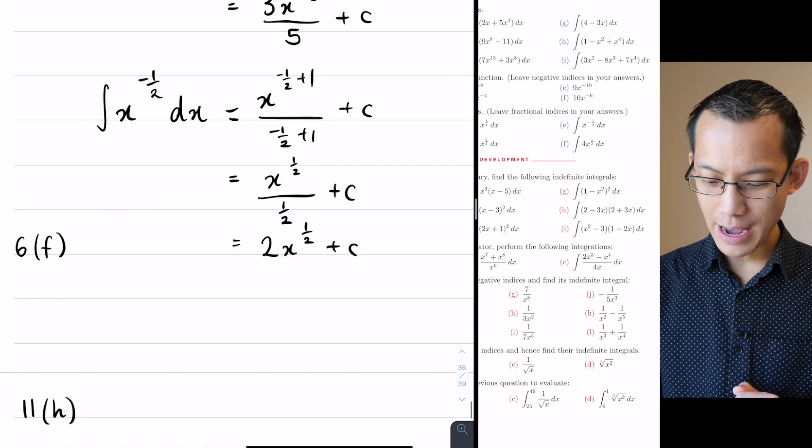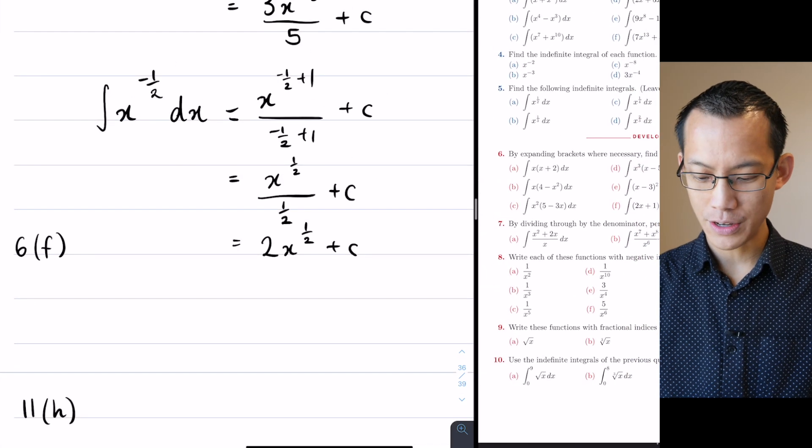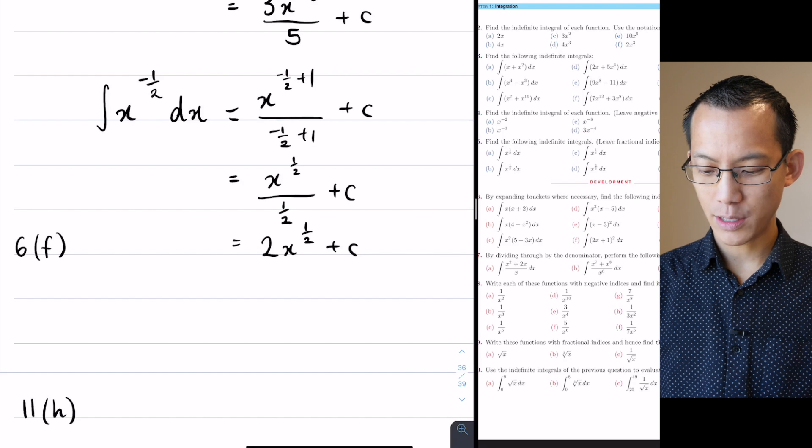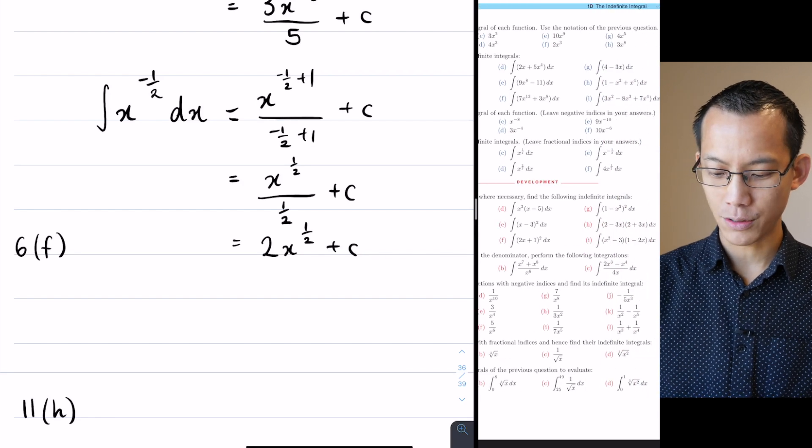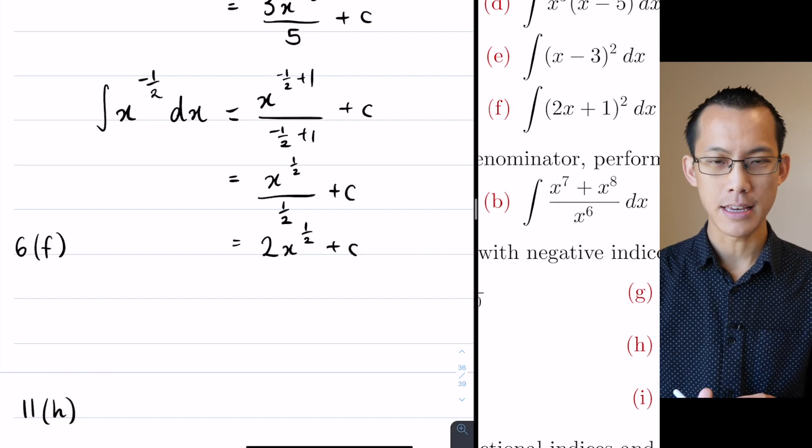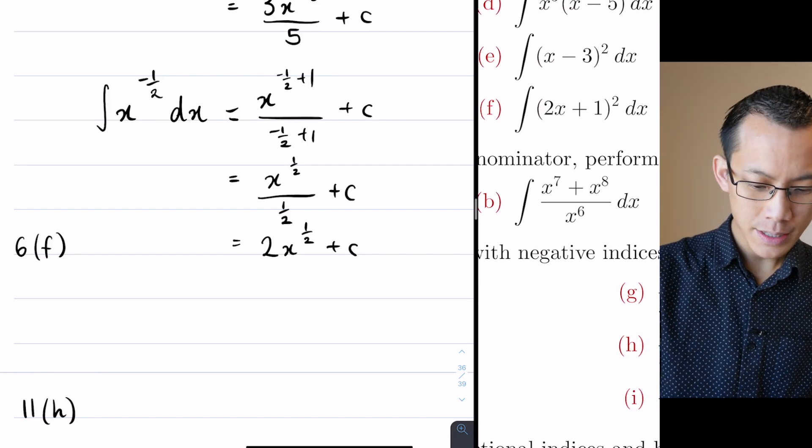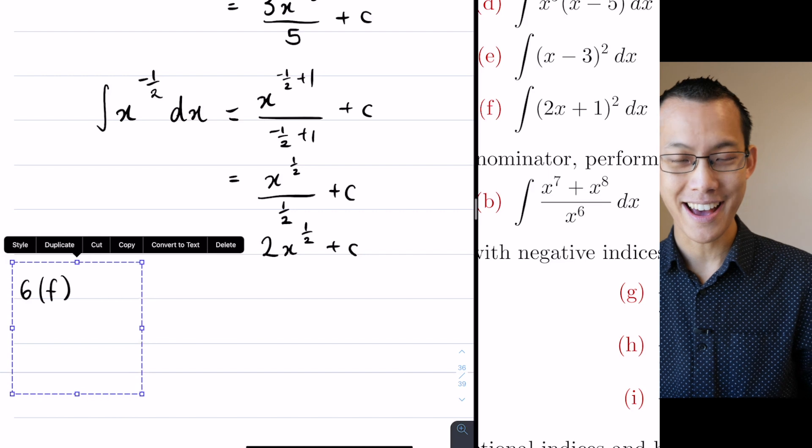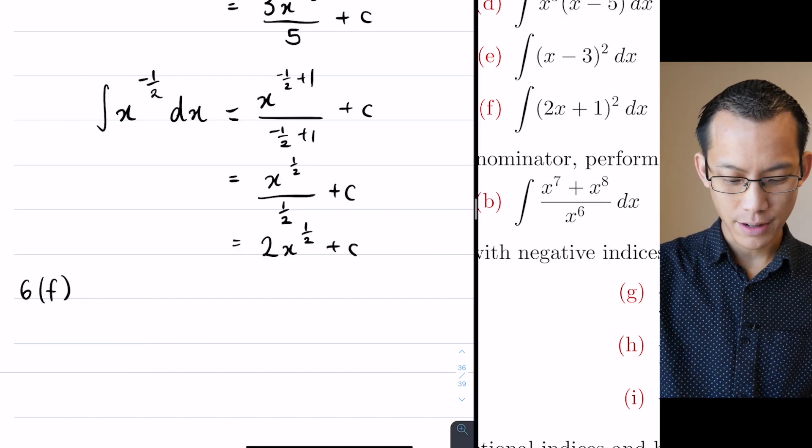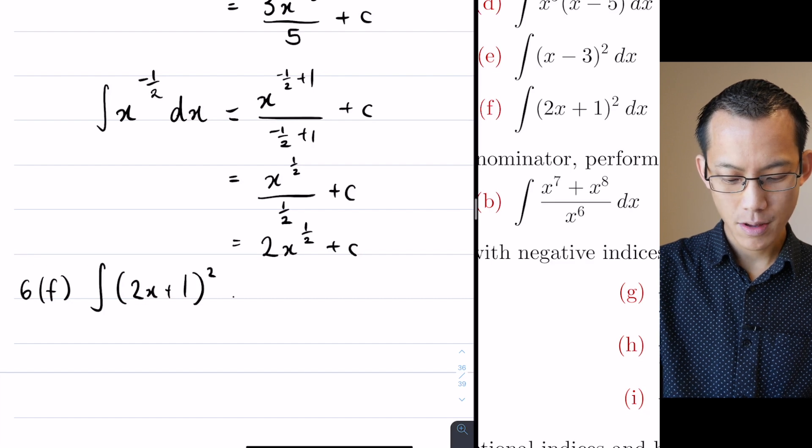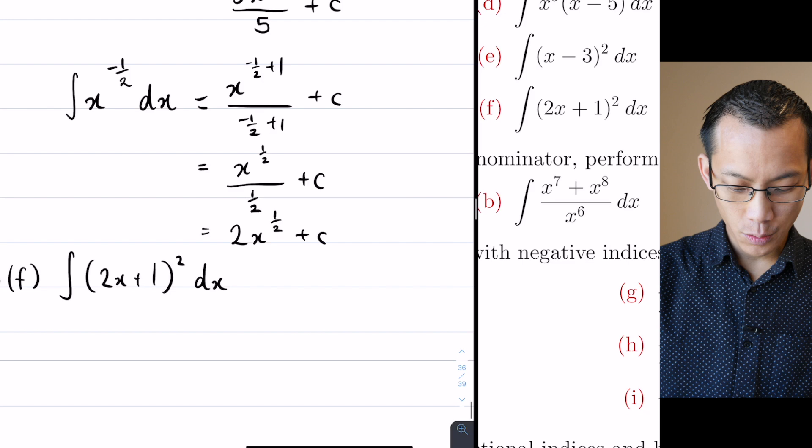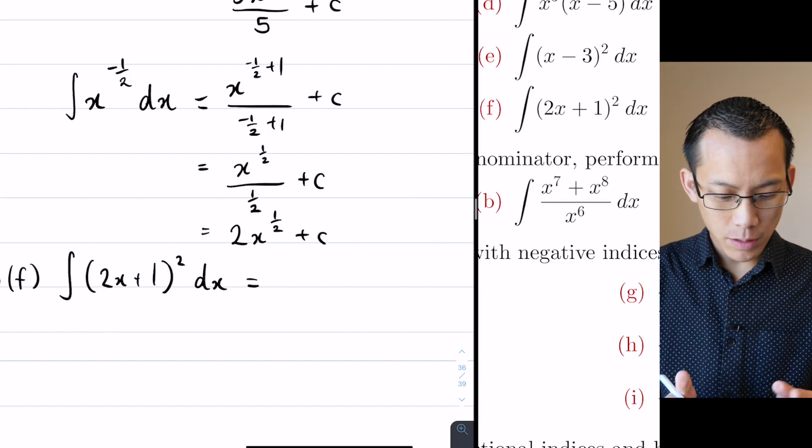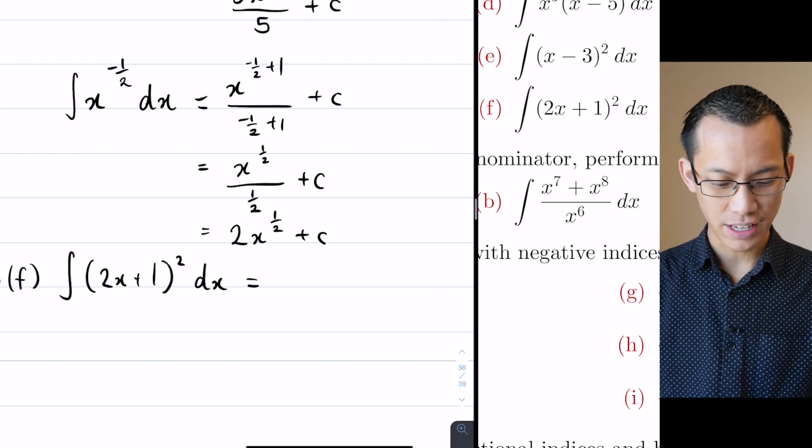Alright, now the last one we're going to have a go at together just before I set you loose to do a few more of those other questions is 6f. Now it says, and it's very specific here, by expanding brackets where necessary, find the following indefinite integrals. So 6f is asking us to integrate 2x plus 1 all squared with respect to x. Now there is another way to do this which we'll come to in the second half of this lesson, but we're not going to do that quite yet.